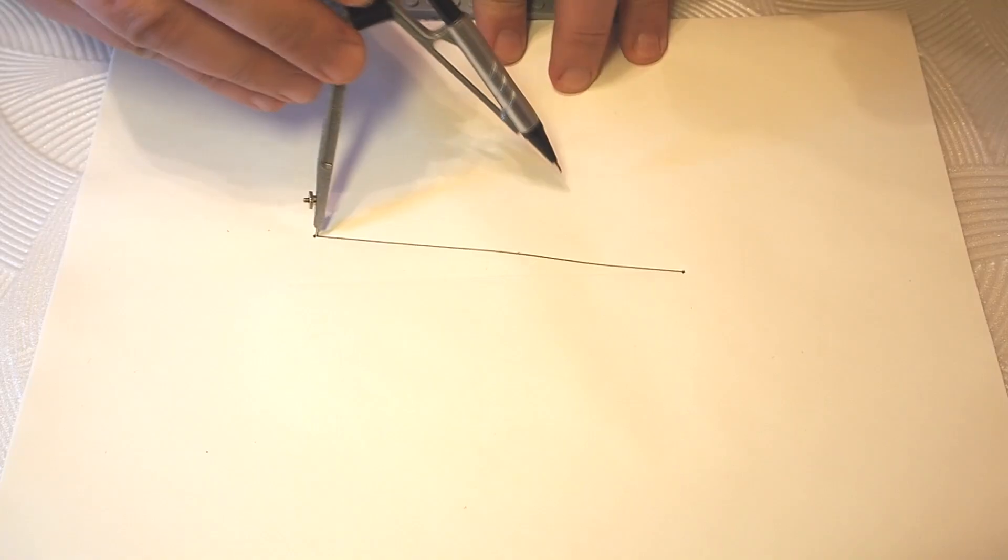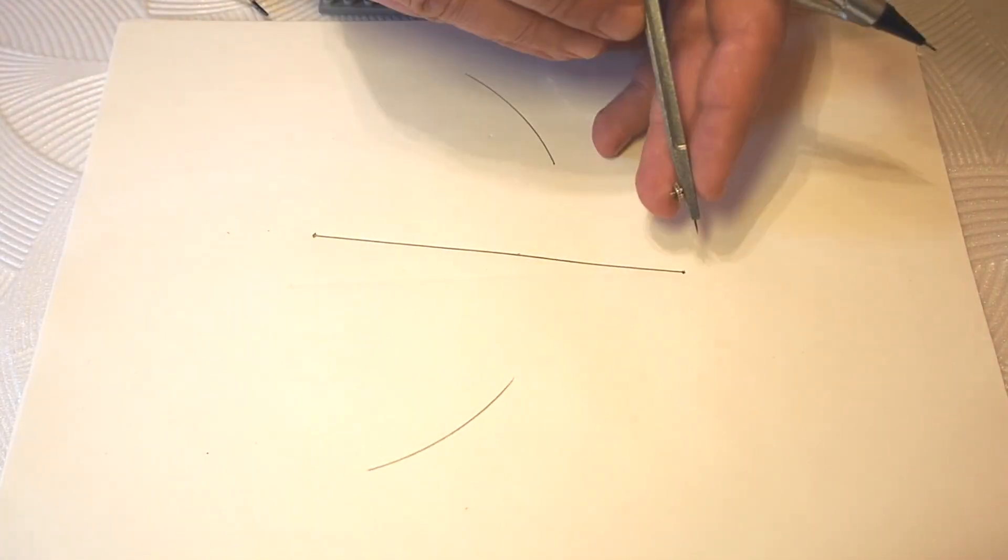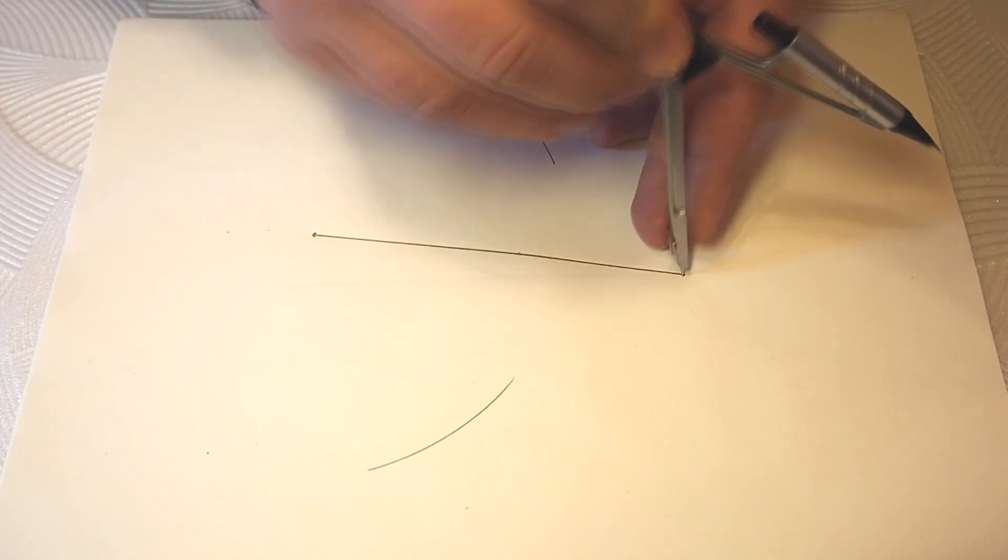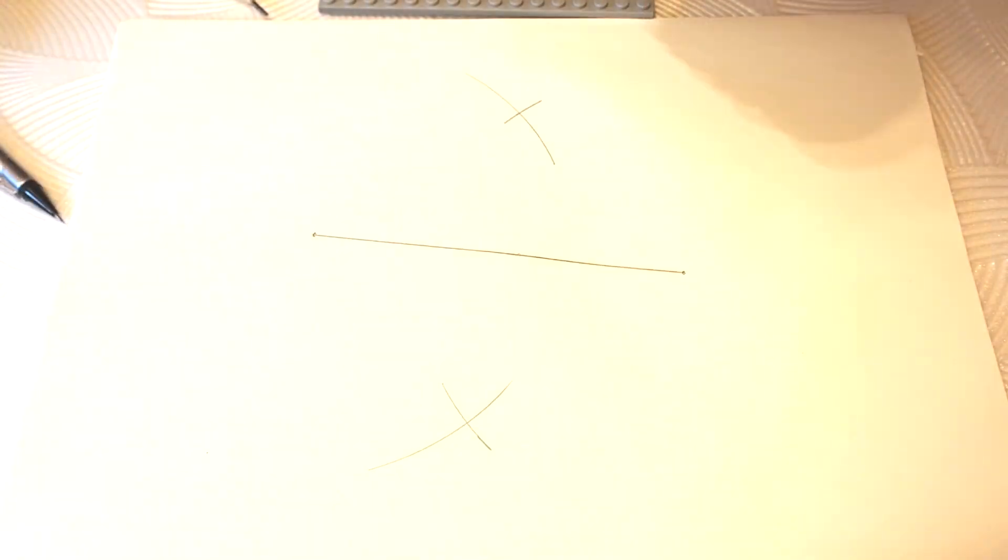Now we draw parts of the circles that cross each other, forming points from both sides of the line. Here are those points.